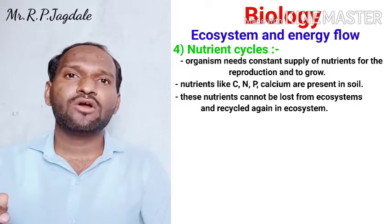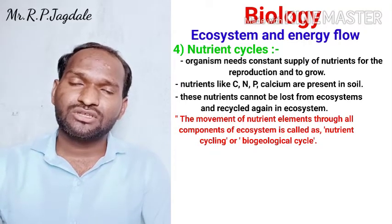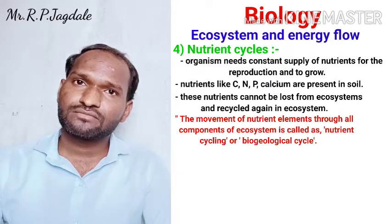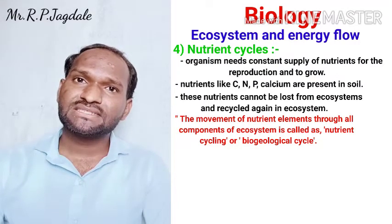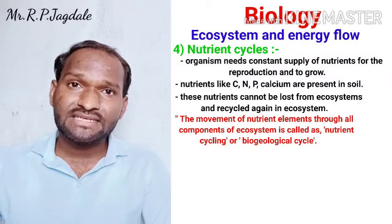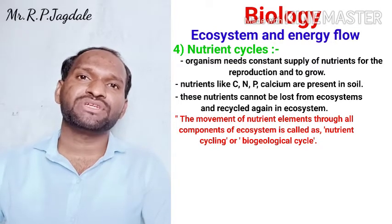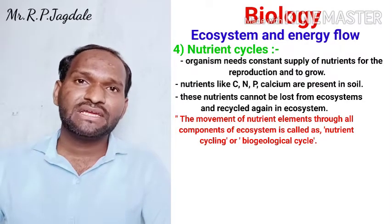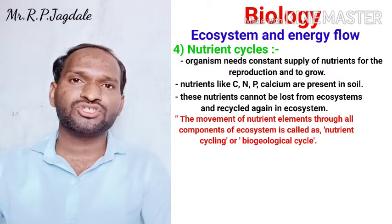The movement of nutrient elements through all organisms of an ecosystem is called the nutrient cycle. Nutrient elements transfer from organism to organism within an ecosystem and return to the same organism. The cycling of nutrient elements through each component of an ecosystem is called the nutrient cycle, or biogeochemical cycle.